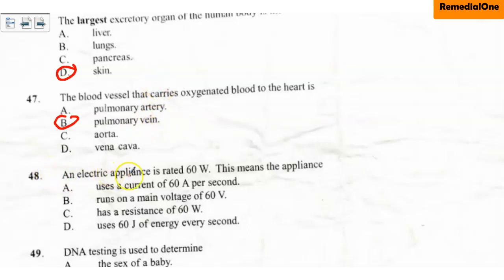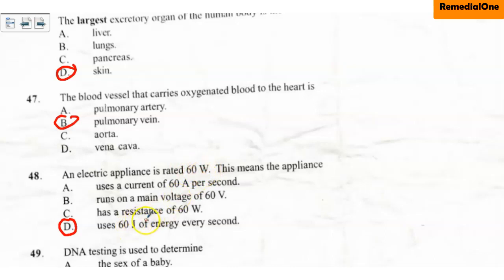Question number 48: An electric appliance is rated 60 watts. This means the appliance — A. Uses a current of 60 ampere per second, B. Runs on a main voltage of 60 volts, C. Has a resistance of 60 watts, D. Uses 60 joules of energy every second. The correct option is D. When the wattage is 60 watts, it means the appliance consumes 60 joules of energy every second. The higher the wattage, the more energy it consumes and the higher the electricity bill.